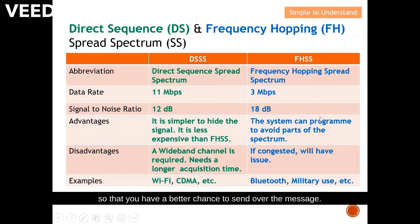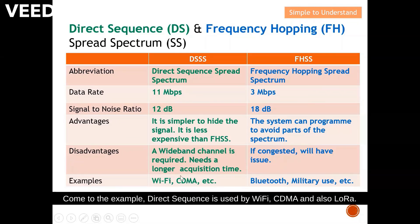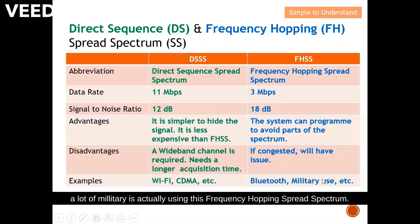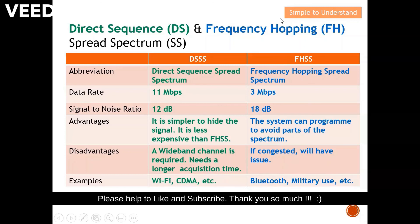In terms of real-world examples: direct sequence spread spectrum is used by Wi-Fi, CDMA, and also LoRa. Frequency hopping spread spectrum is used by Bluetooth, Sigfox, and many military applications. With this I'd like to end our discussion — please help to like and subscribe. Thank you so much.